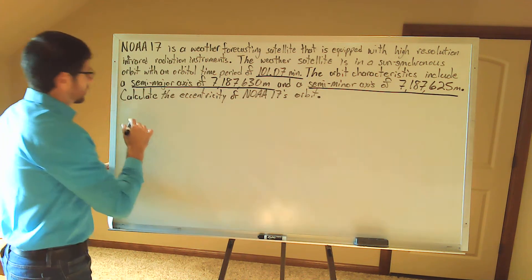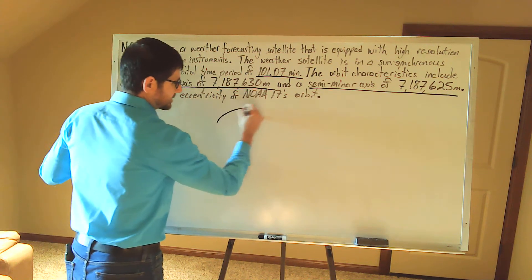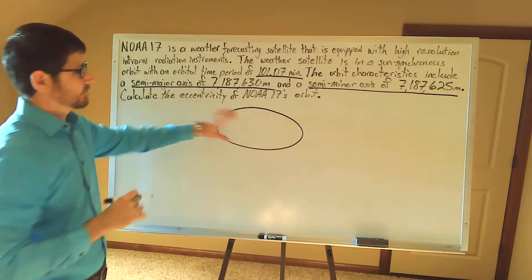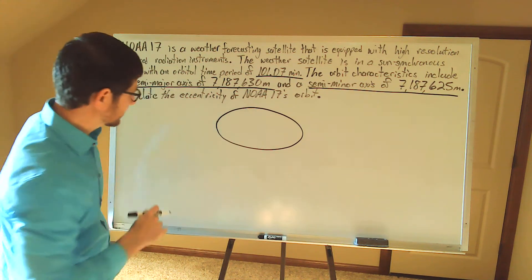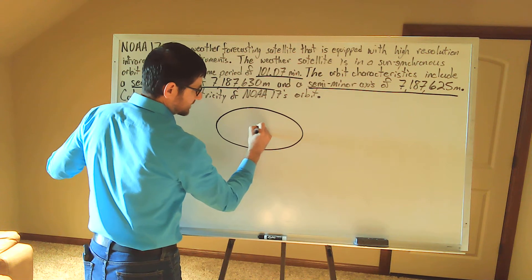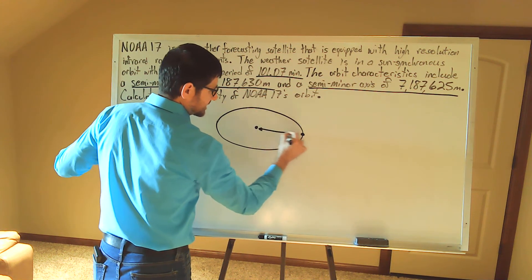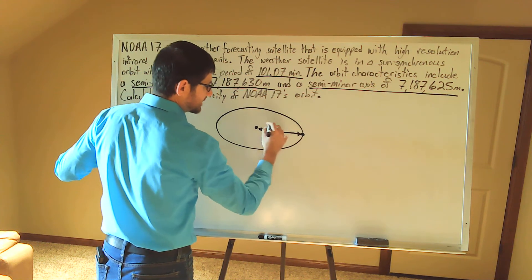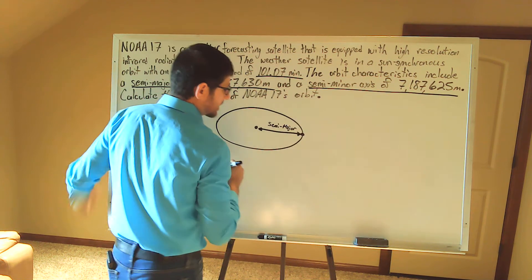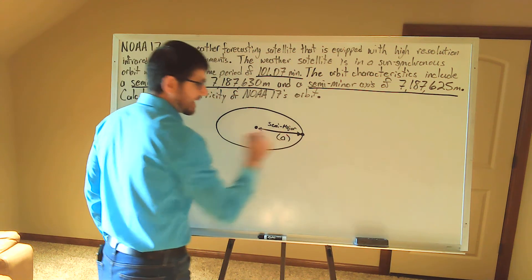So what let's do first is let's just draw an ellipse and for this problem the ratio is not to scale here, but from the center of the ellipse, right here, this is my semi-major axis, and it is identified by lowercase a.